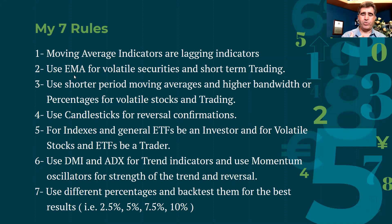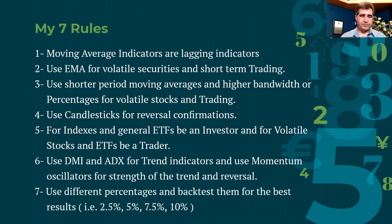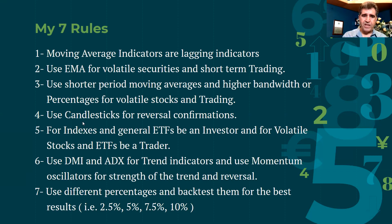Rule two: use the Exponential Moving Average for volatile securities where price moves back and forth quickly, as the SMA will lag too much. Rule three: for short-term trading, use shorter period moving averages - 3-period or 8-period exponential moving averages. You don't want to use a 200-period moving average if you're dealing with volatile stocks as a day trader or short-term trader. Use a higher bandwidth percentage for volatile stocks.